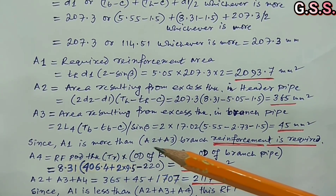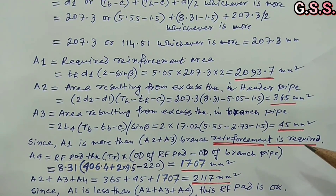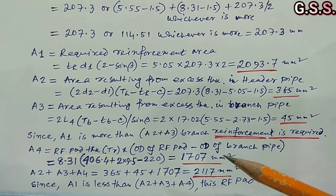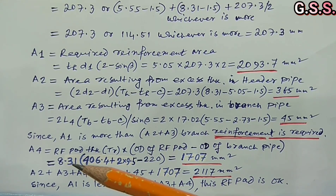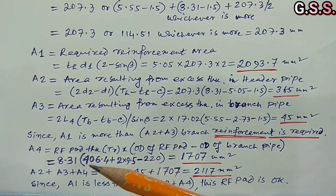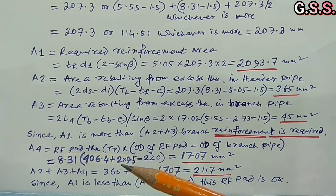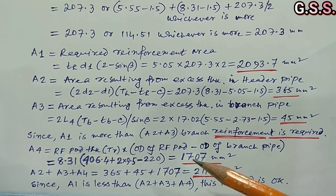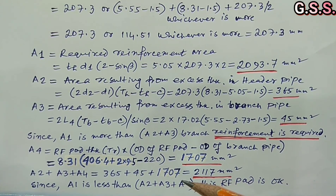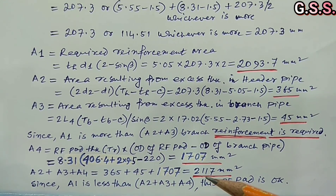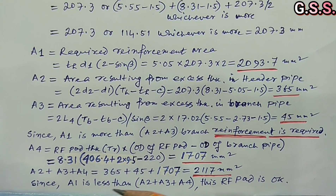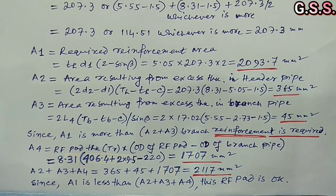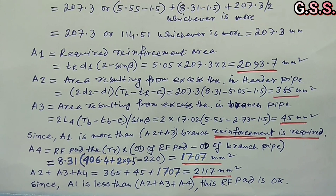Since A1 is more than A2 + A3, branch reinforcement is required. Capital A4 = RF pad area = capital TR × (OD of RF pad − OD of branch). Capital TR = 8.31 mm. OD of RF pad = OD of header pipe (406.4 mm) + 2 × RF pad thickness − 220 mm (OD of branch pipe), giving capital A4 = 1707 mm². Now A2 + A3 + A4 = 2117 mm². Since A1 is now less than A2 + A3 + A4, this RF pad is okay. In this way we can check whether the branch shall be a reinforced branch with RF pad or an unreinforced branch without RF pad.